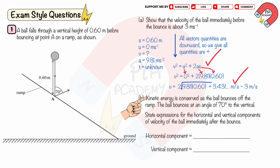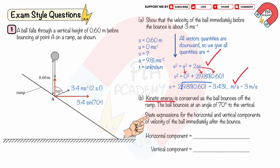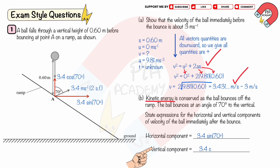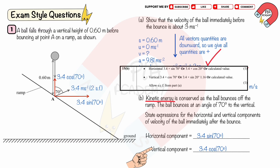Part b: kinetic energy is conserved as the ball bounces off the ramp. The ball bounces at 70 degrees to the vertical. State expressions for the horizontal and vertical components of velocity immediately after the bounce. Since kinetic energy is conserved, the rebound velocity is 3.4 meters per second. The horizontal component is 3.4 sin70°, and the vertical component is 3.4 cos70°. You get two marks for the correct horizontal component and the correct vertical component.